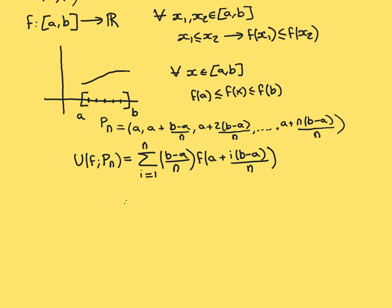So the thing we need here is just the value of the function at the upper bound of each subinterval. If you take i equal to 1 in this sum, you've got the length of that first subinterval, and then you want the value of the function at a plus (b−a)/N — that is, the i term with i equal to 1 — and you can see that's all working out nicely.